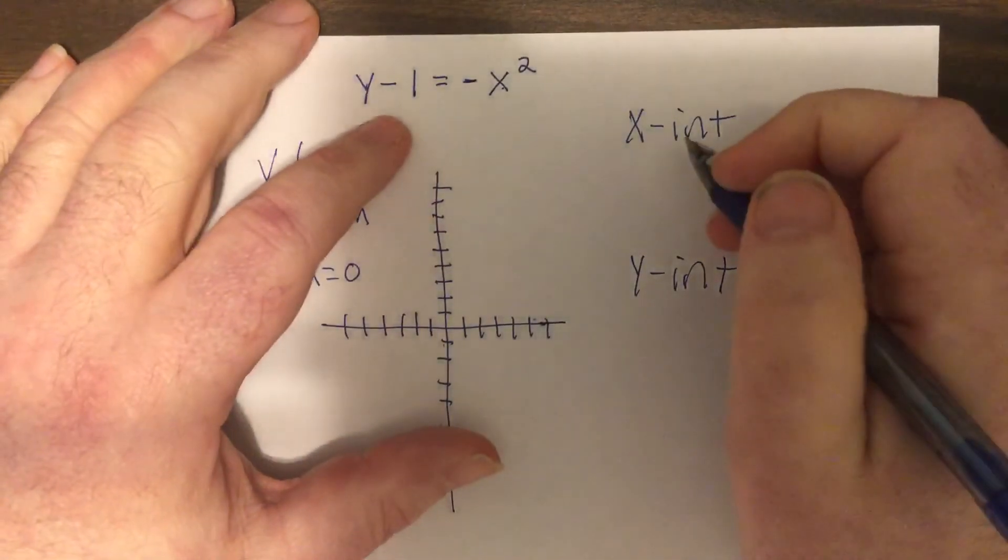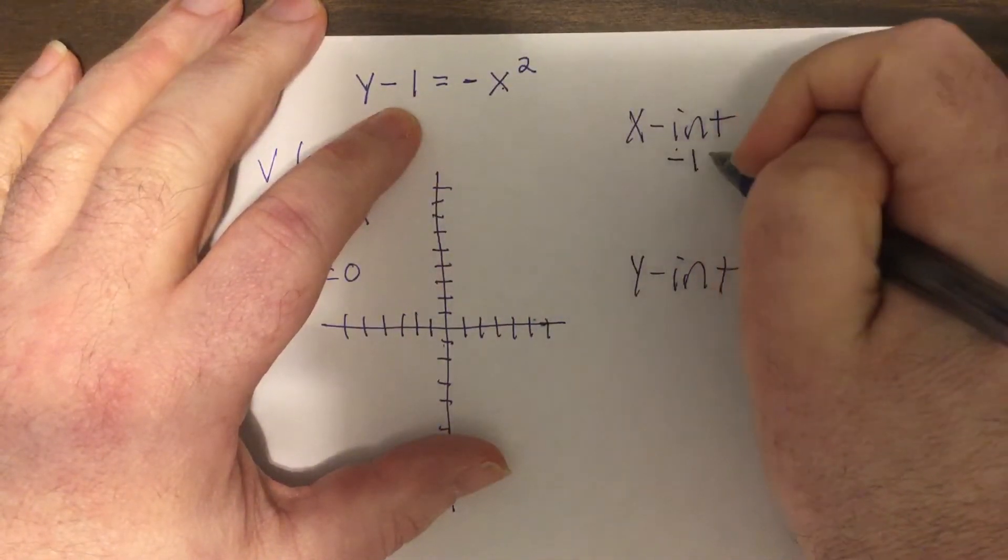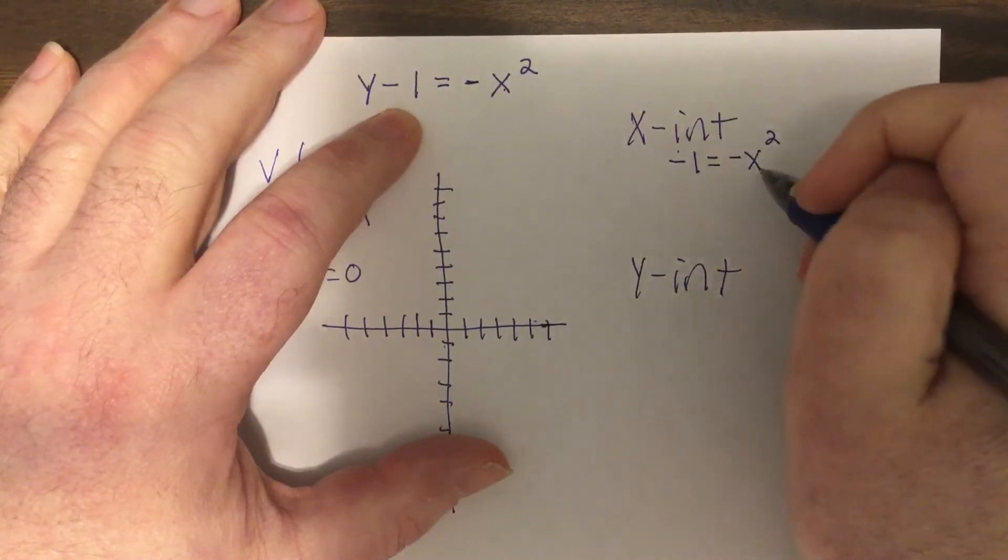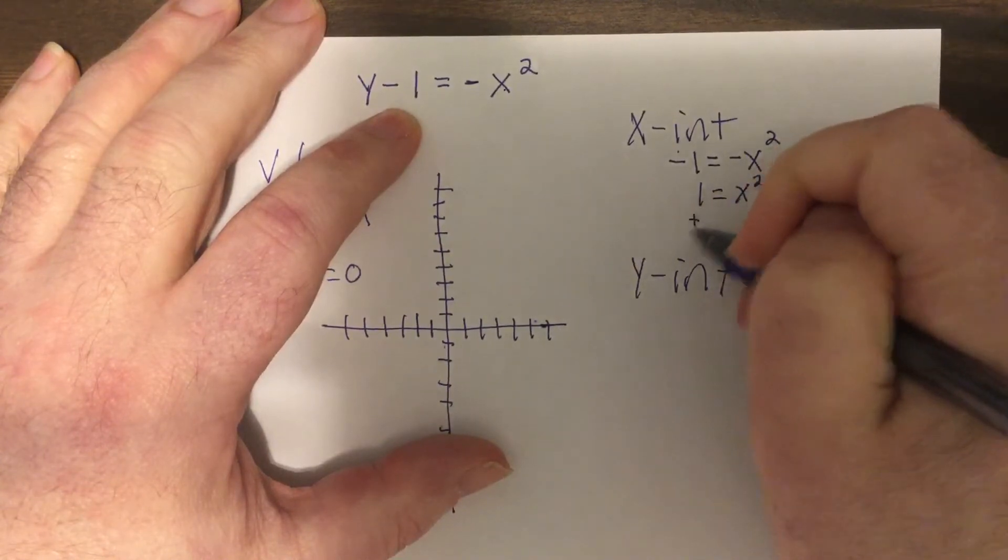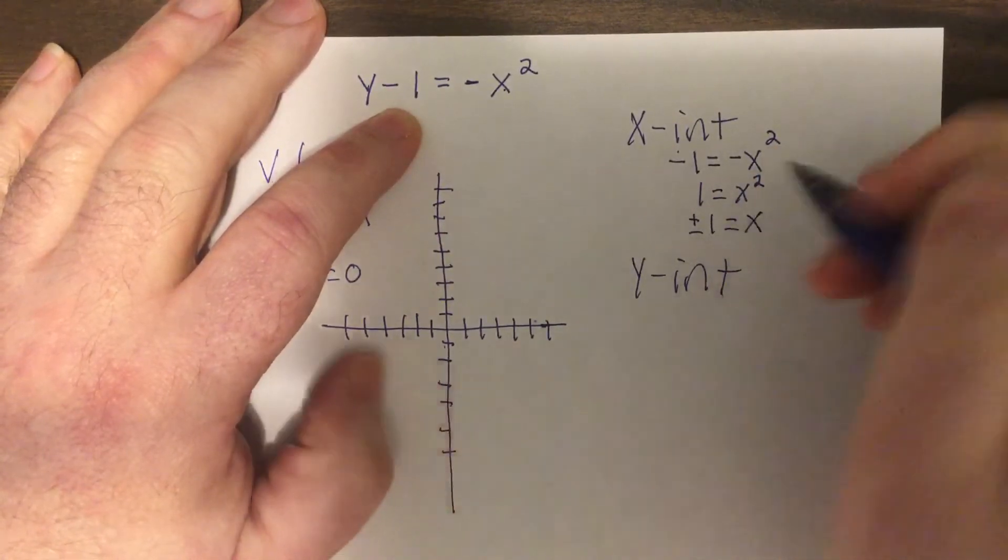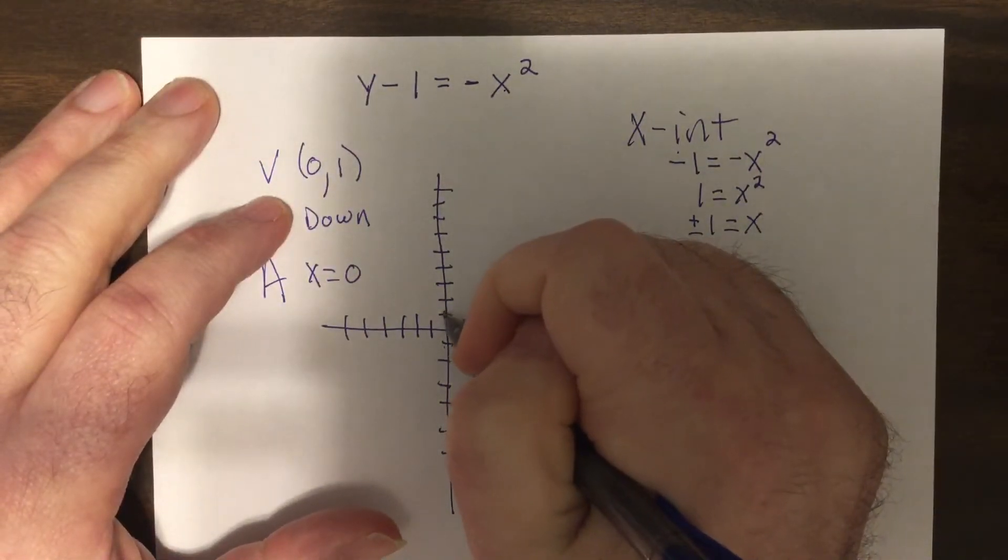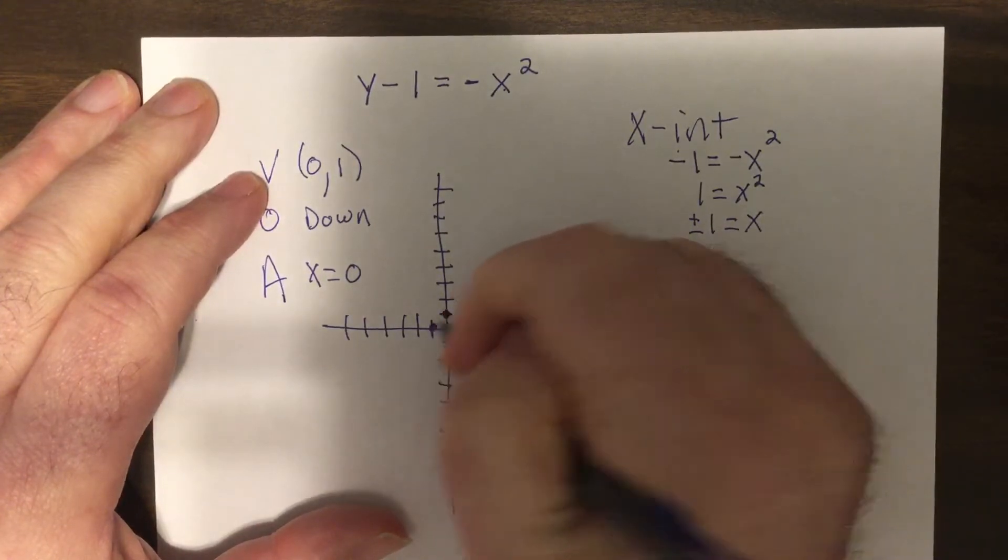So the X intercept put zero in for Y. So I'd have negative one equals negative X squared. So take the opposite of both sides. That'd be plus or minus one equals X. So, I didn't. Zero, one is right here. Now plus or minus one would be here and here.